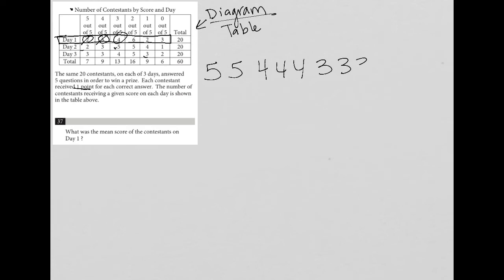So one, two, three, four contestants that scored a three. And then this six here represents the fact that there were six contestants that scored a two. So one, two, three, four, five, six. And next, our two here is that there were two contestants that scored one. So one and one. And then there were three contestants that scored zero. So one, two, three.